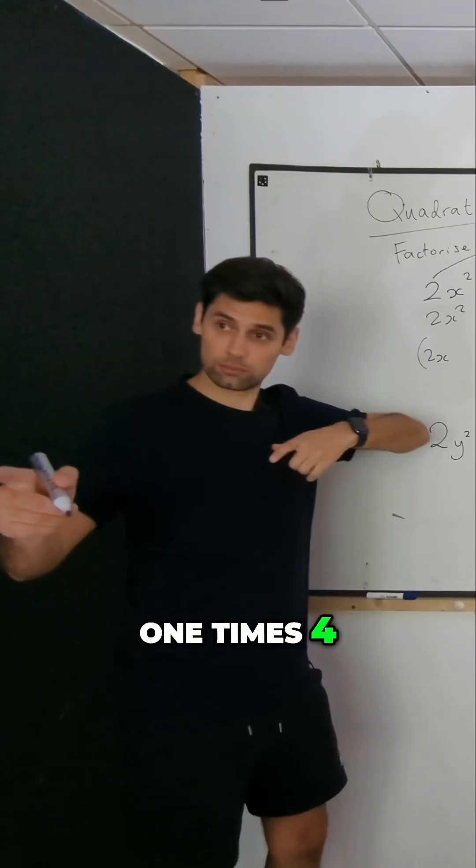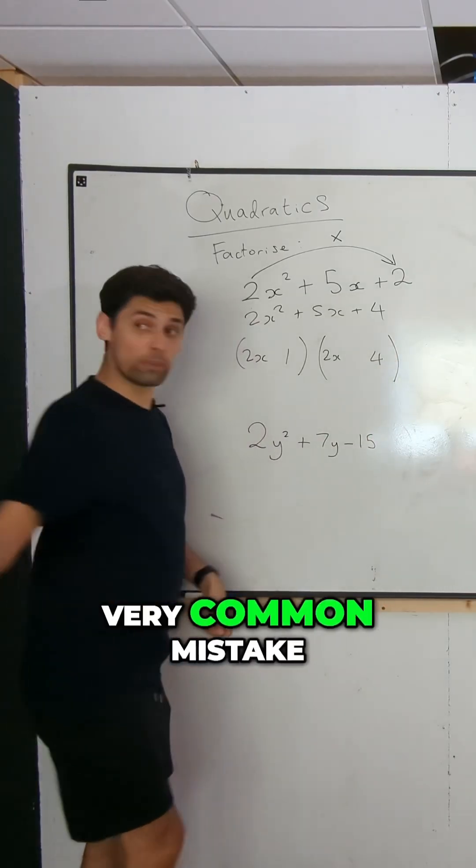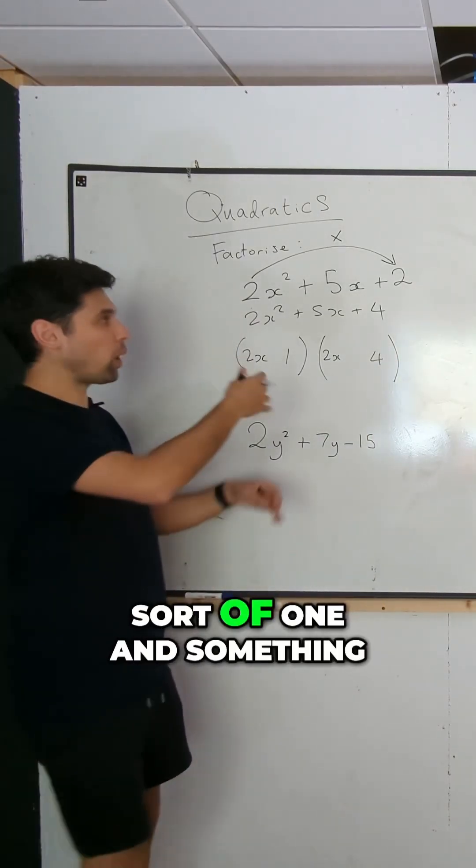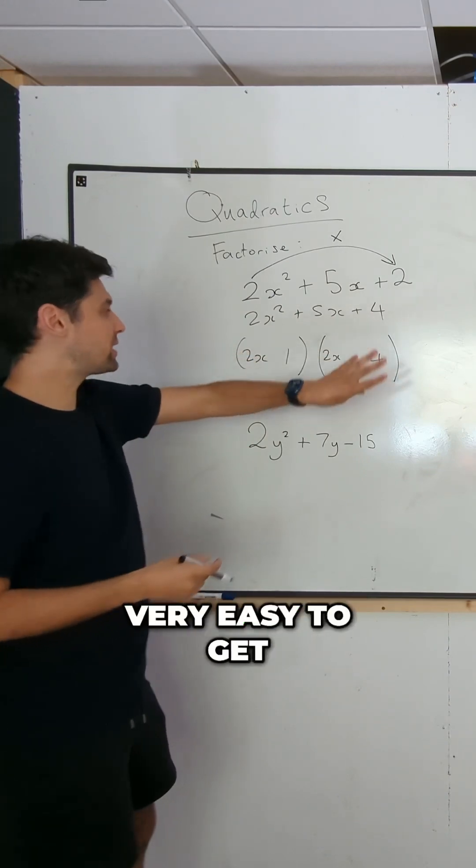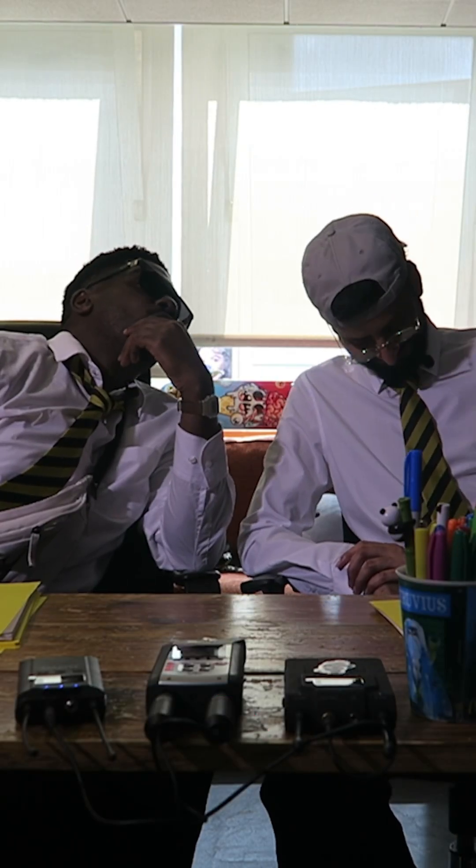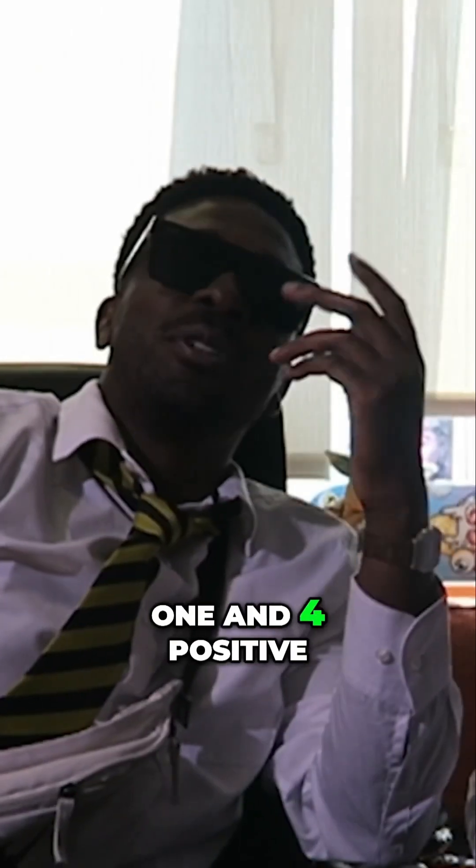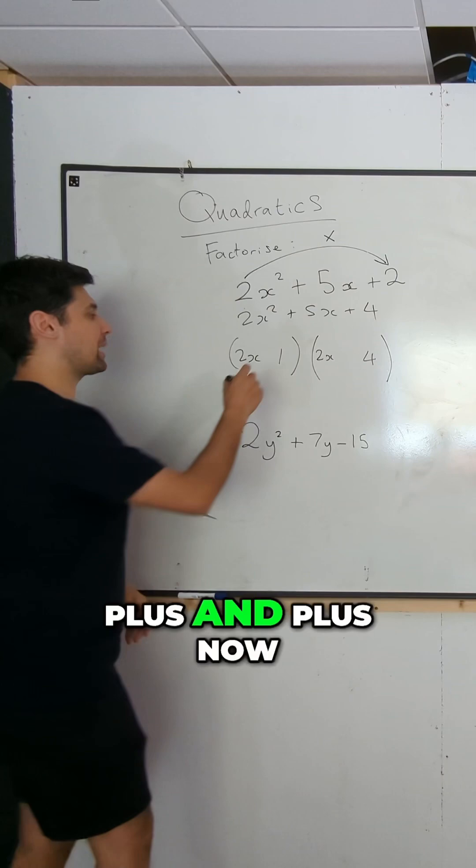We've got one times four, one and four. That's the one. Very common mistake though, when you're dealing with sort of one and something, the four and the five, very easy to get mixed up. One and four makes positive five. Positive one and positive four, plus and plus.